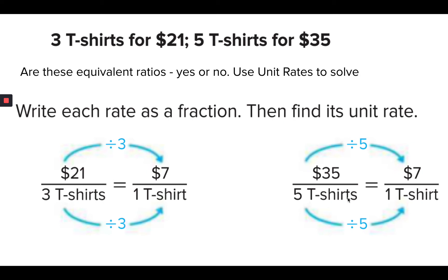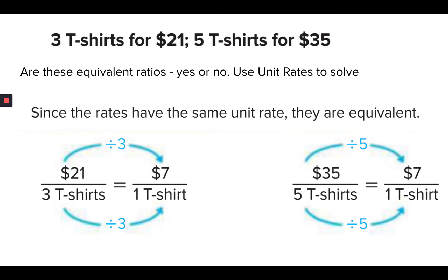35 over 5 reduces down to 7 over 1. That is the unit rate. Hopefully, you can see by looking at this that these are indeed equivalent ratios. They have the same unit rate. They are equivalent. So your answer would be yes.